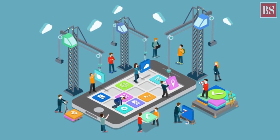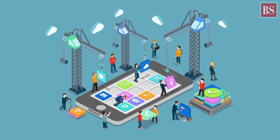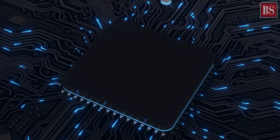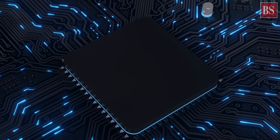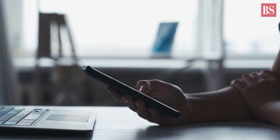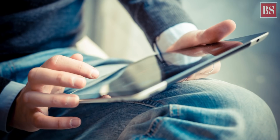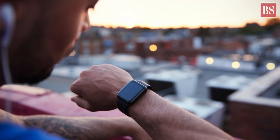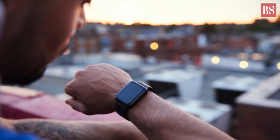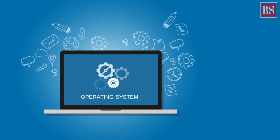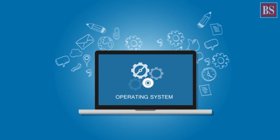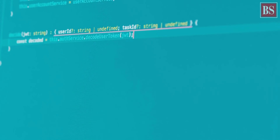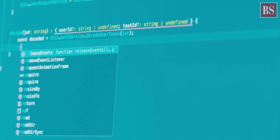An operating system is a software program required to operate and manage a computing device like a smartphone, tablet, computer, smartwatch, etc. It is the operating system that eliminates the need to know coding language to interact with computing devices.